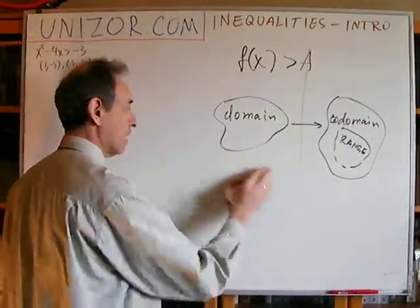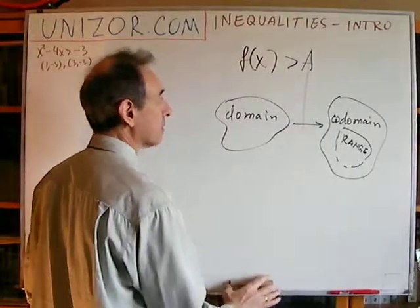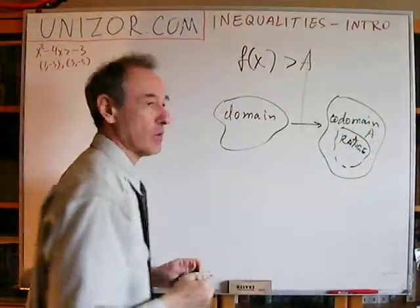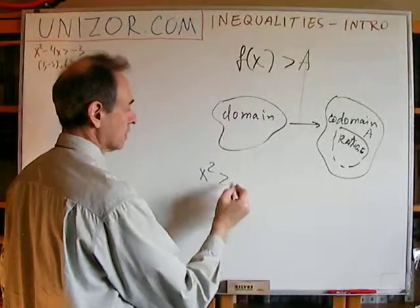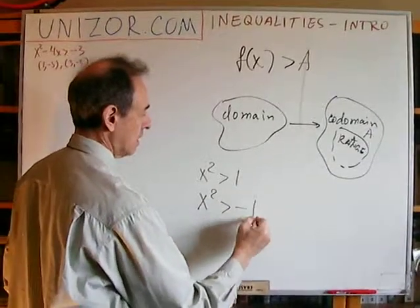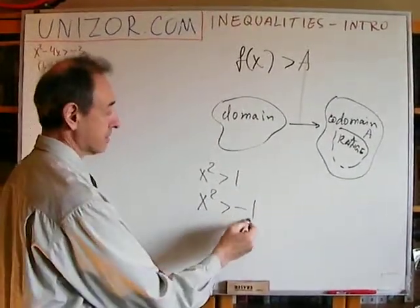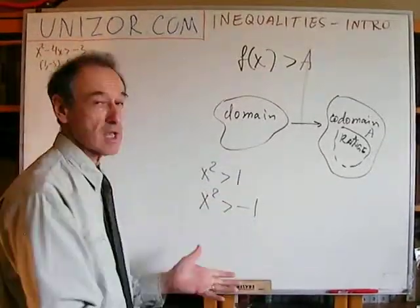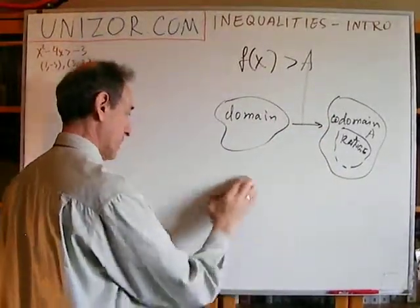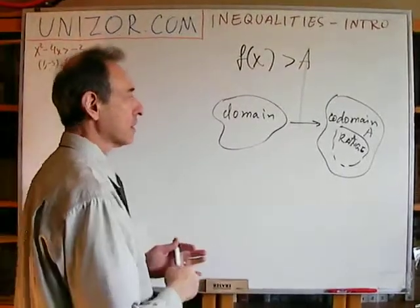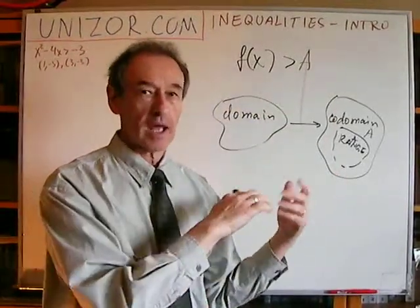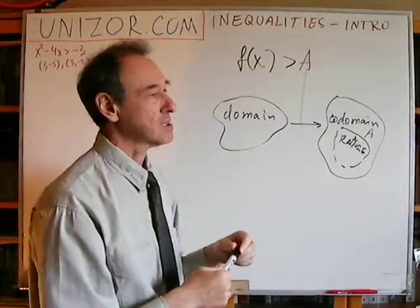What does matter is that this particular constant A must belong to the codomain. It can be either inside the range or outside of the range. For x squared, we can consider the inequality when 1 belongs to the range, or we can consider it with minus 1, which doesn't belong to the range but still makes sense. So element A is supposed to belong to the codomain. The value of the function can be greater — or less than, etc. — you can always substitute any other inequality sign.